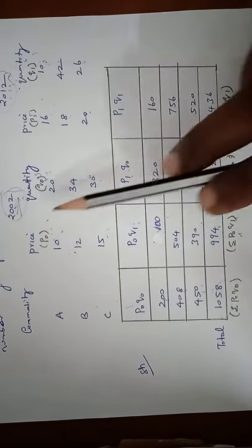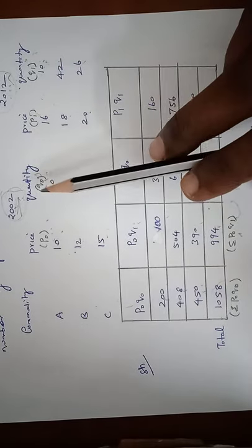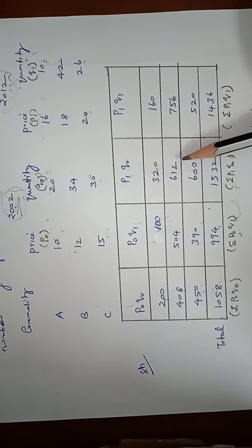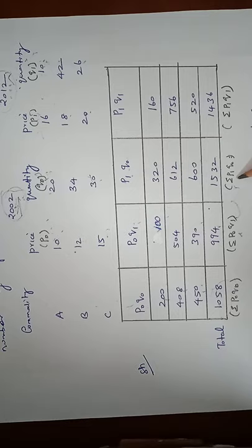Similarly, P1Q0. So P1 into Q0, multiply these two results: 320, 612, 600. Adding these three values, 1532. This is sigma P1Q0.